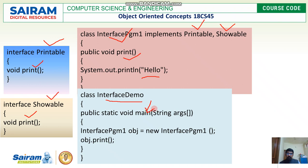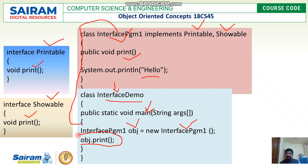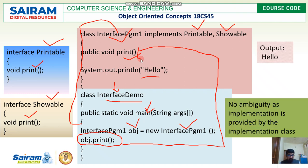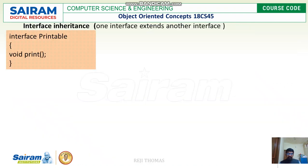In the main class interface demo, we have the main method. We create an object of class pgm1: InterfacePgm1 obj = new InterfacePgm1. Then we call obj.print. There is no confusion here because we are calling the method in class pgm1 where the implementation is provided, and it prints hello. There is no ambiguity since the implementation class provides the method.